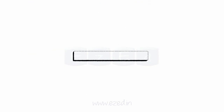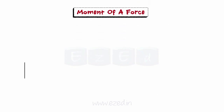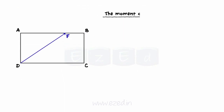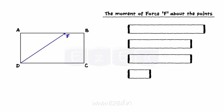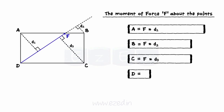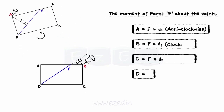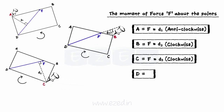Let's learn how to calculate the moment of a force. Consider a rectangular plate ABCD with a force of magnitude F acting on it. Let's find the moment of F about all the points of the plate — A, B, C, and D. The moment of the force about a point is found by multiplying the magnitude of the force with the perpendicular distance to that point. While calculating the moment, that particular point is considered to be fixed. We observe anticlockwise moment about point A, clockwise moments about points B and C, and zero moment about point D as the force F passes through point D.